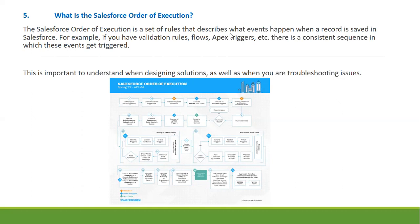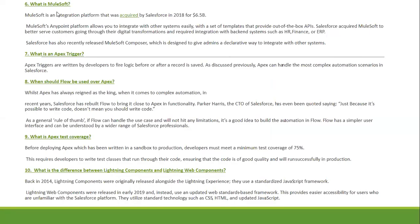What is the Salesforce order of execution? The Salesforce order of execution is the set of rules that describes what happens when a record is saved in Salesforce. For example, if you have validation rules, Flows, and Apex triggers, there is a constant sequence in which these events get triggered. This is important to understand both when designing solutions and when troubleshooting issues.